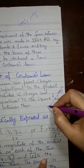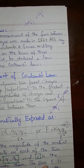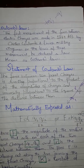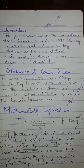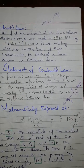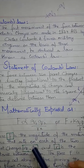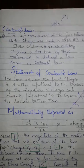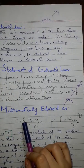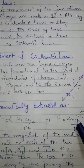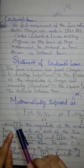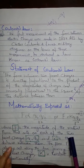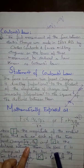The statement of Coulomb's Law: the force between two charges is directly proportional to the magnitude of the charges and inversely proportional to the square of the distance between them. If q1 and q2 are the two charges separated by distance r, q1 exerts a force on q2 and q2 exerts a force on q1.